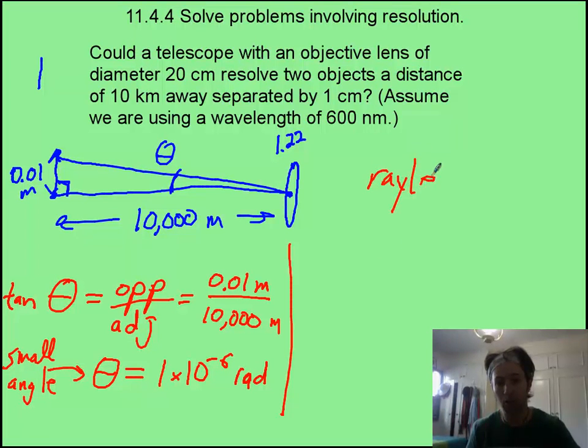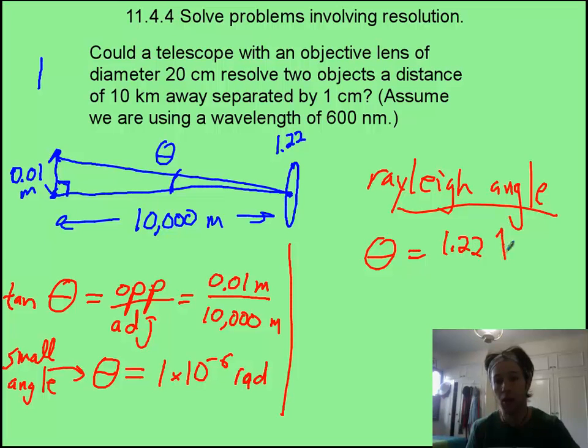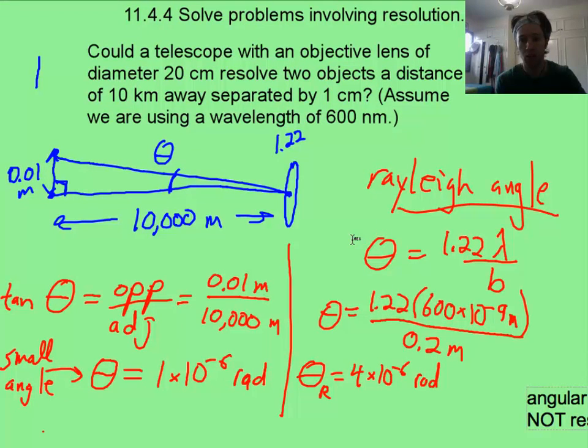Now, let's find out what the Rayleigh angle is going to be by using theta equal to 1.22 lambda over b. Here, I filled in what the Rayleigh criterion was. Notice I used the 1.22, because it's a circular aperture, as most everything that you would use in real life probably would be. And you end up with the Rayleigh angle for just being resolved 4 times 10 to the negative 6th.